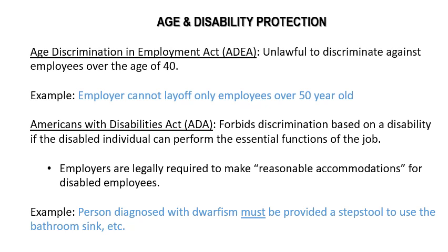The ADA forbids discrimination based on a disability if the disabled individual can perform the essential functions of the job. That is a key part — if their disability prevents them from doing the job, that would fall under a business necessity. But if you can provide reasonable accommodations to that disabled person so that they can successfully do the job, then you need to do that, and you can't prevent them from being hired.